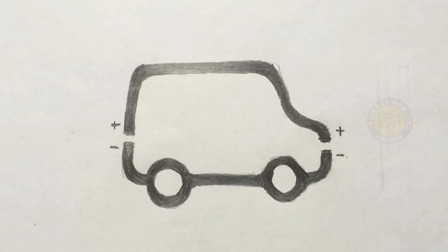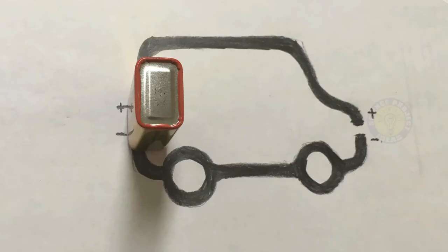Once you're done with your design, place the battery on one of the gaps. Align the positive and negative ends with the graphite lines.